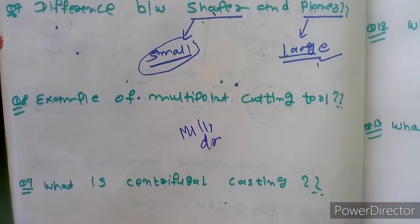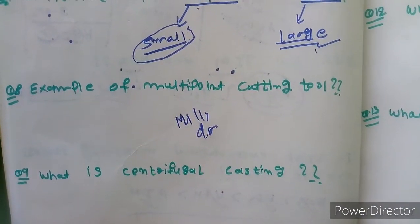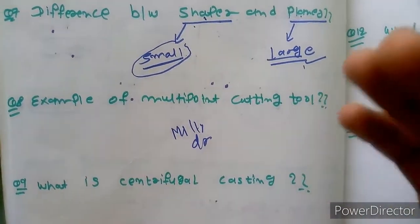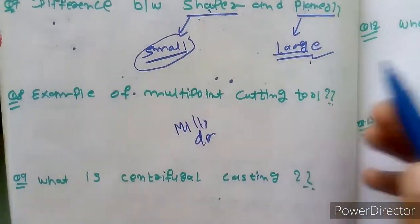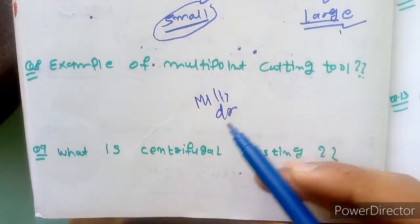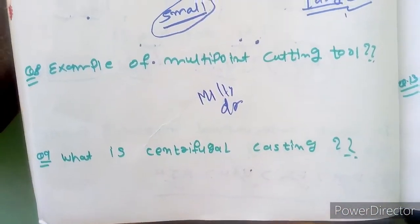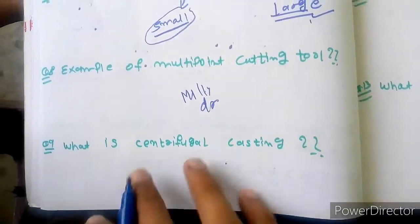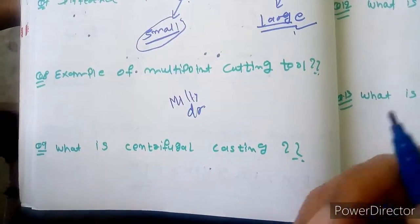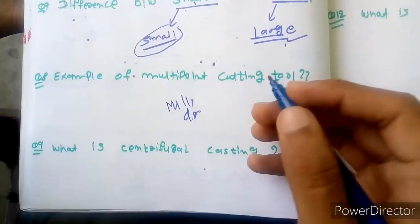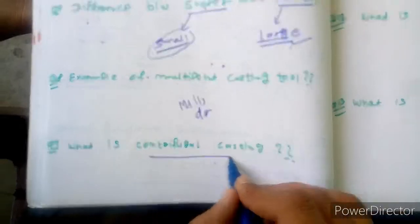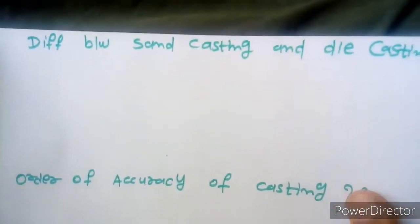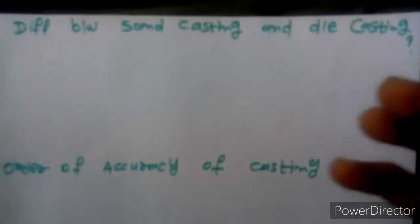Examples of multi-point cutting tools are milling cutters and drilling tools. Multi-point cutting tools are those that, when they rotate, they touch the work piece at more than one point. What is centrifugal casting? Centrifugal casting is used to make pipes. In centrifugal casting, the pattern rotates 360 degrees and molten metal is filled inside this rotating pattern.